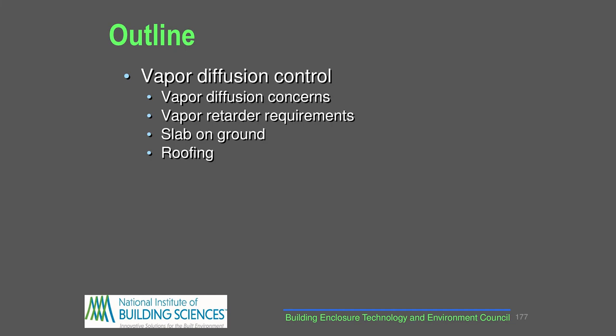Touching on vapor diffusion: the outline covers concerns about vapor diffusion, vapor retarder requirements that help control diffusion, and different assemblies - slab on ground, roofing, and walls.